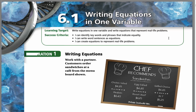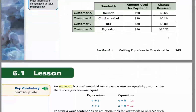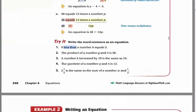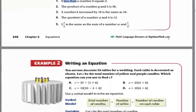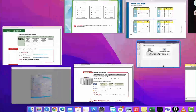Today we will continue with the first lesson in chapter six: writing equations in one variable. We stopped at example two yesterday, so let's go back and see example two.